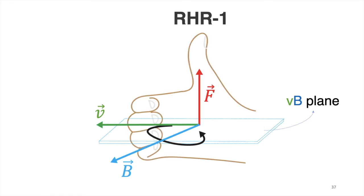To guide us, we use the right-hand rule number one. The first right-hand rule guides us in determining the relative directions of the velocity vector of the charge or current and the direction of the magnetic field and the direction of the resulting magnetic force.